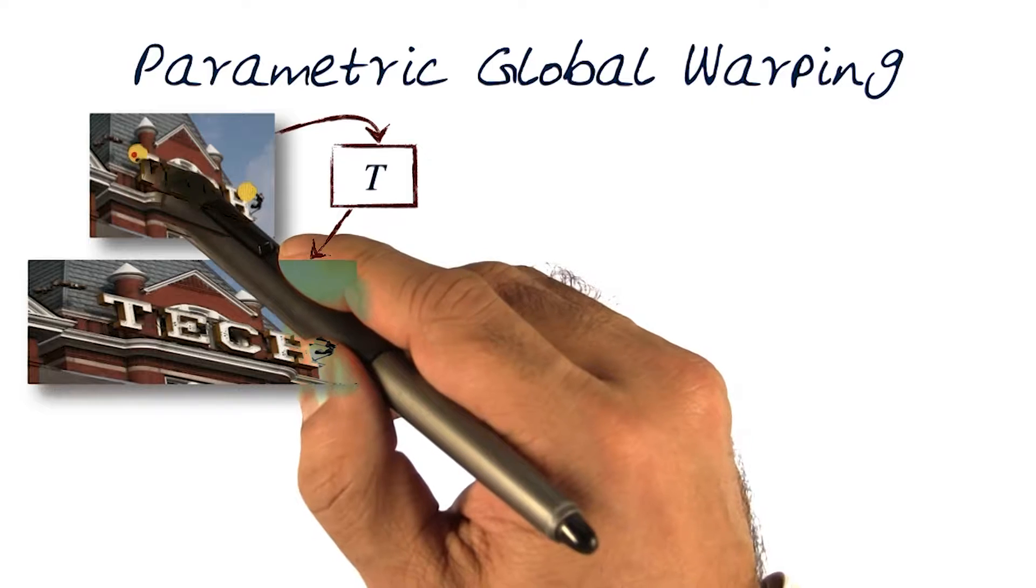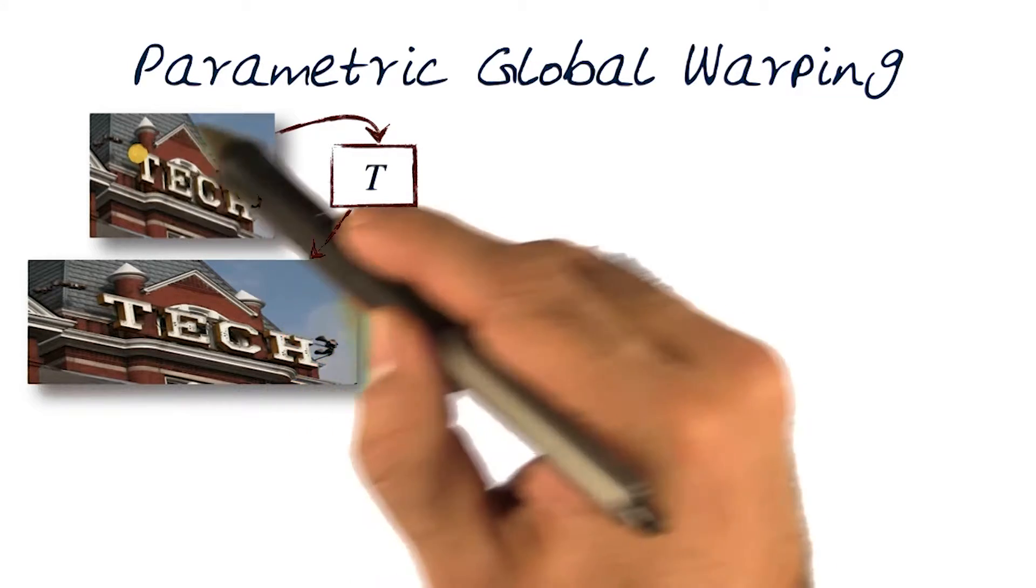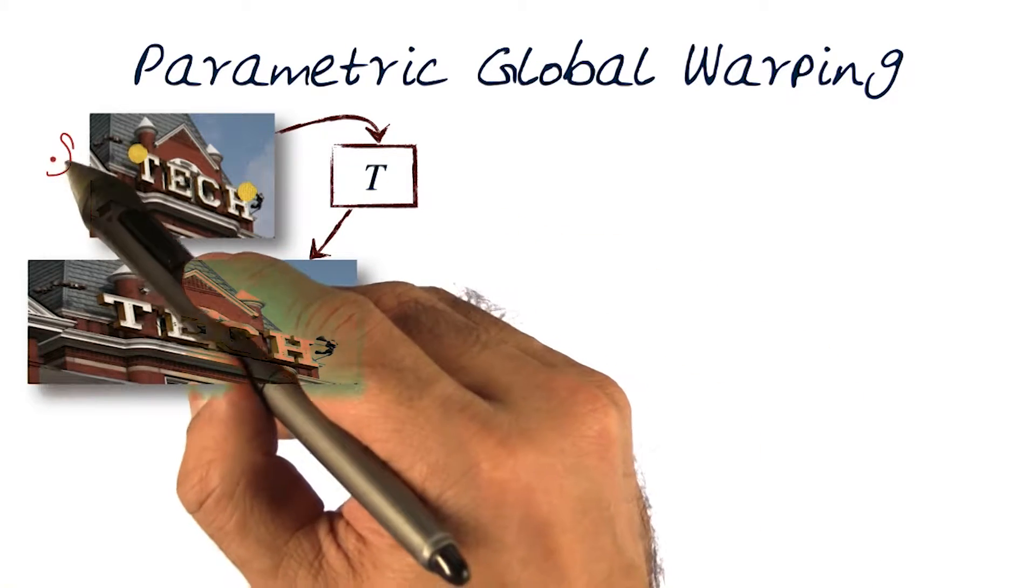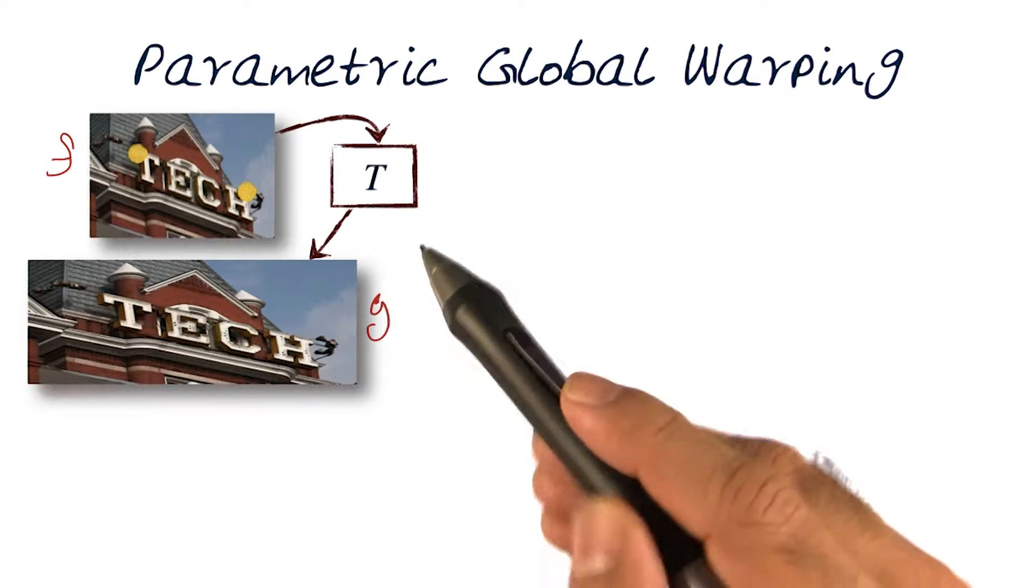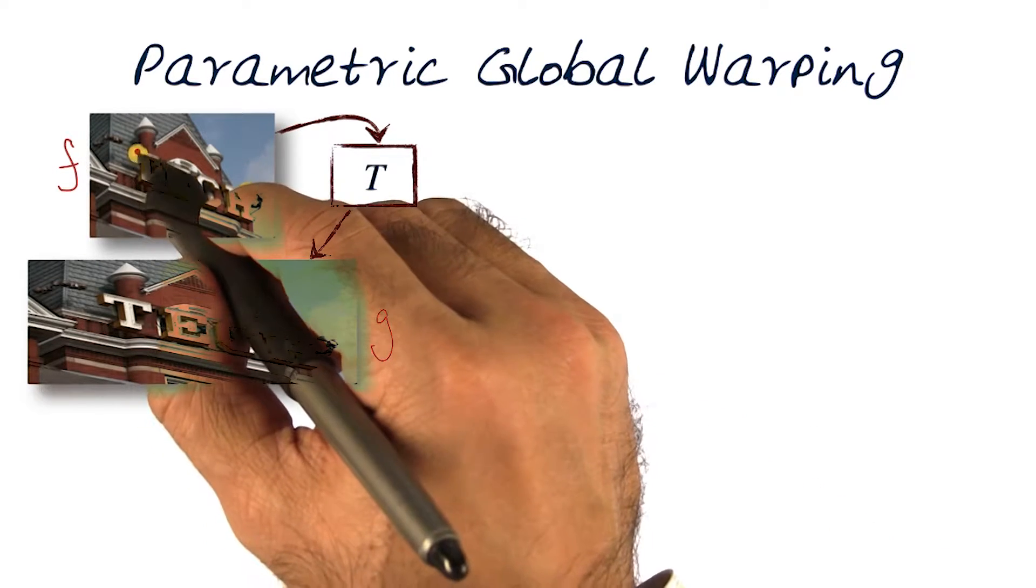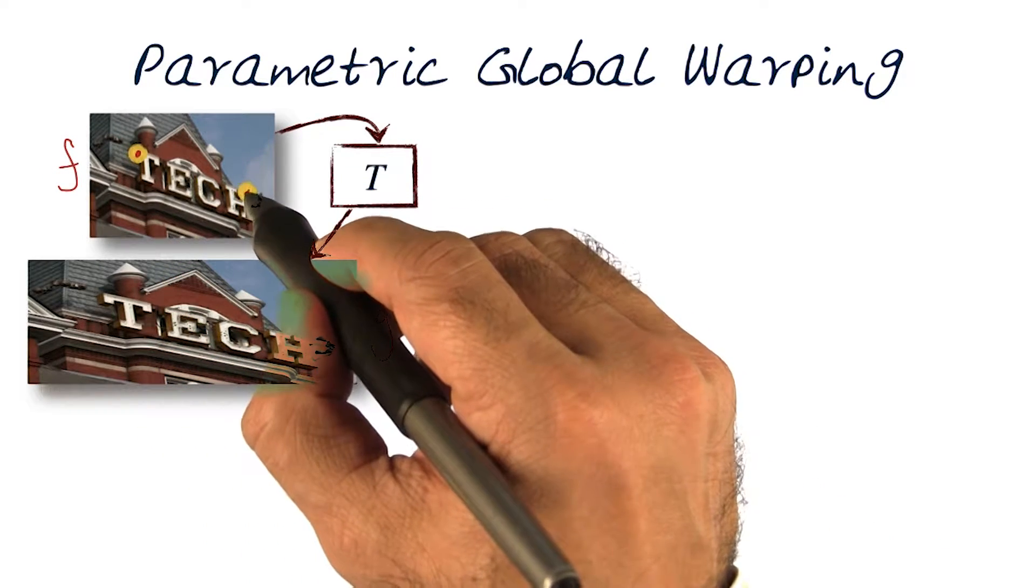Let's start off by finding two points on my original image f. This is my original image f, and I'm trying to get my output image g. Here I have two points that I've marked.